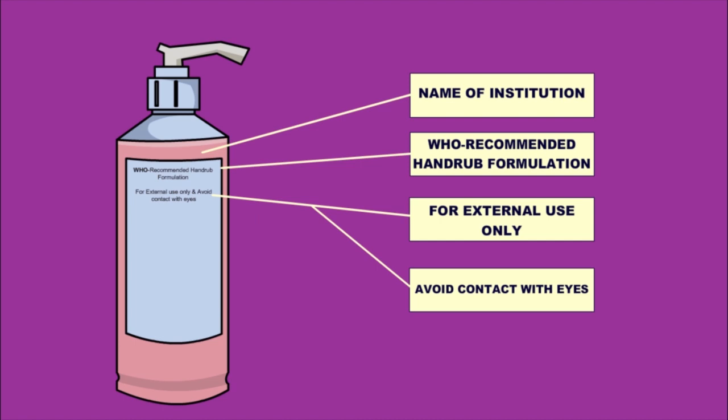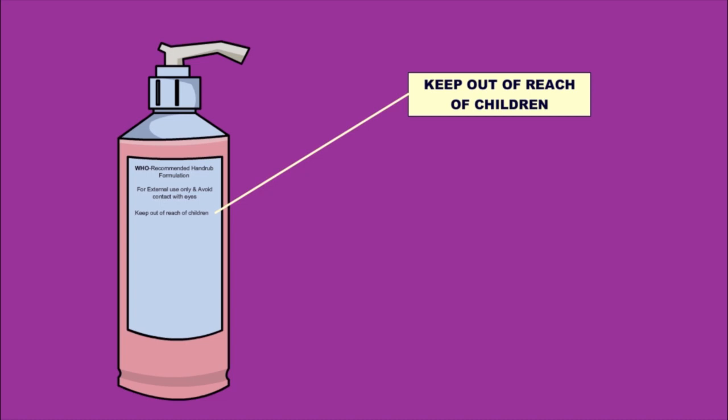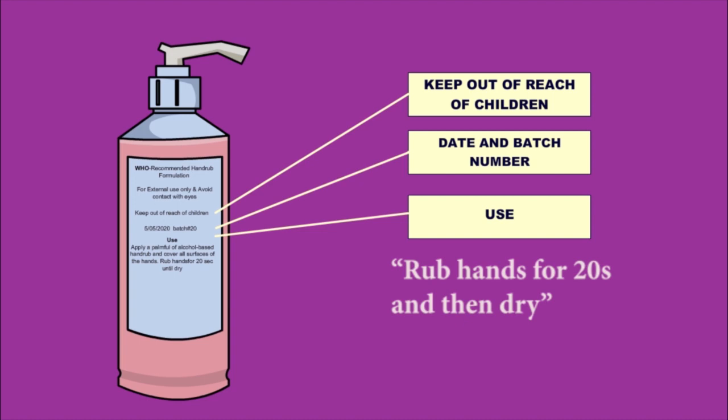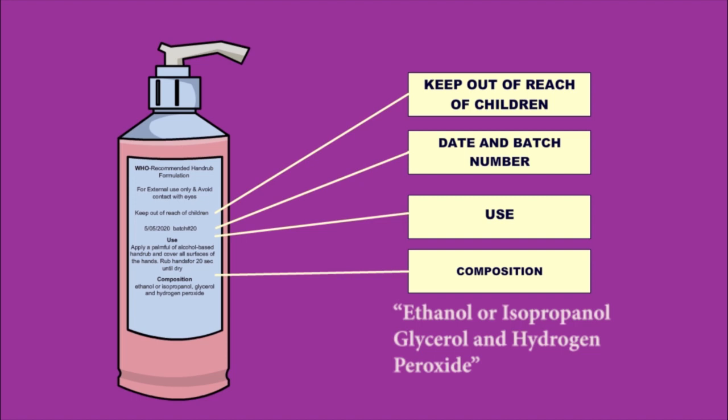Use: apply a palmful of alcohol based hand rub and cover all surfaces of the hand. Rub hands gently for 20 seconds until dry. Composition: ethanol or isopropanol, glycerol, and hydrogen peroxide. Flammable, keep away from flame and heat.